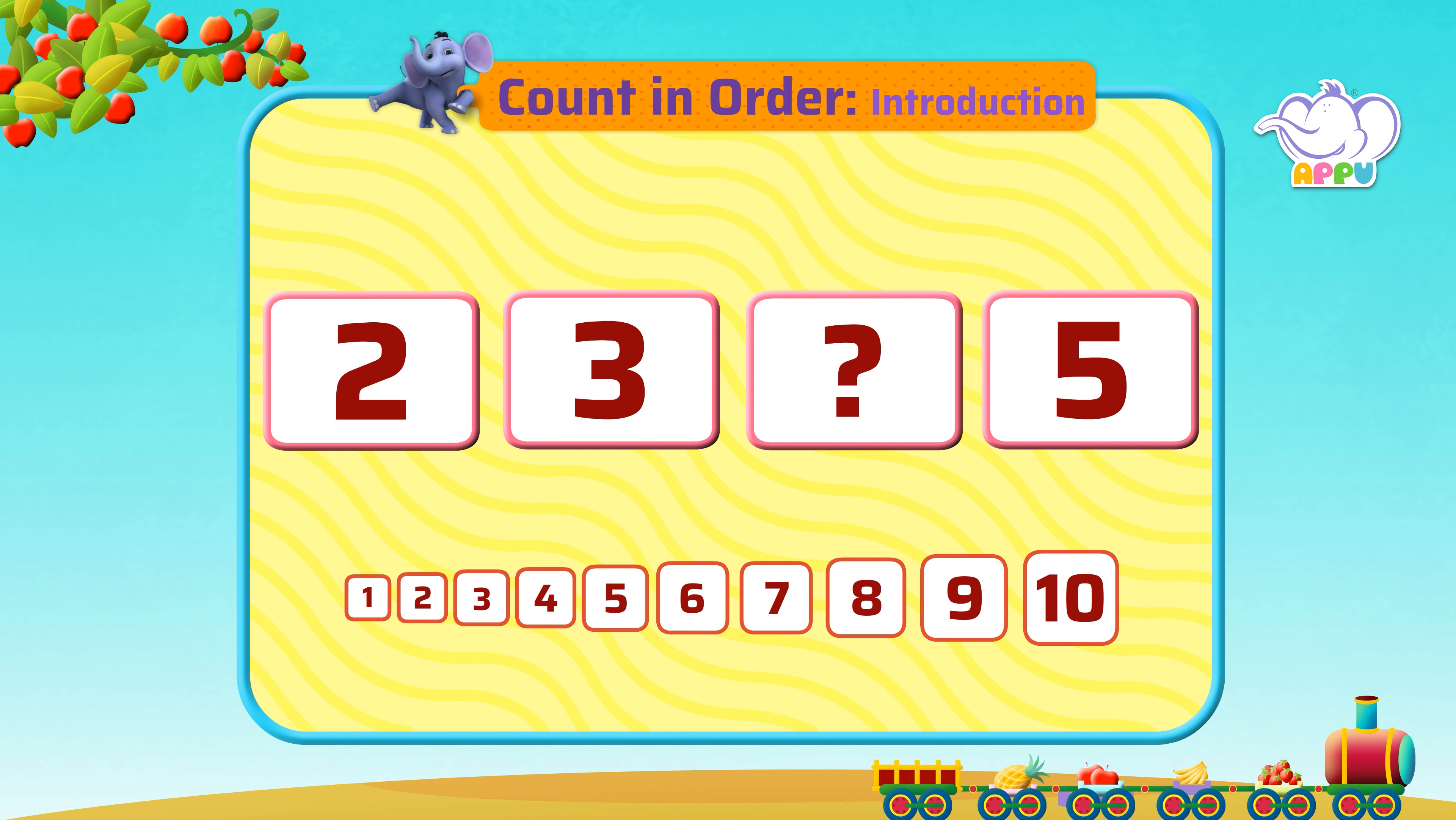these numbers. We have two, three, a missing number, and then five. What is the missing number? What comes after number three and before number five? Number four! The missing number is four. Two, three, four, and five.